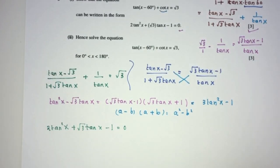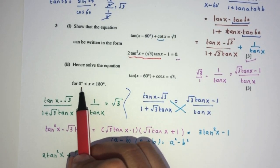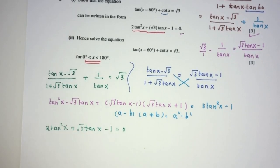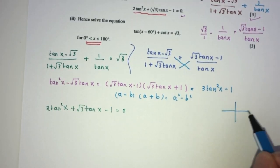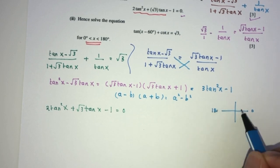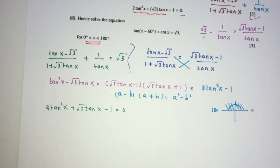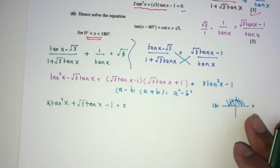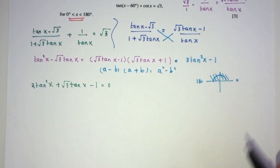Now for part 2, hence, using that information, using this, solve this for the value of x between these two. Keep in mind x is only between 0 and 180, only these two. So only the first and second quadrant. So let's solve this equation. How would you solve this? Obviously we'll use the formula for quadratic equation.